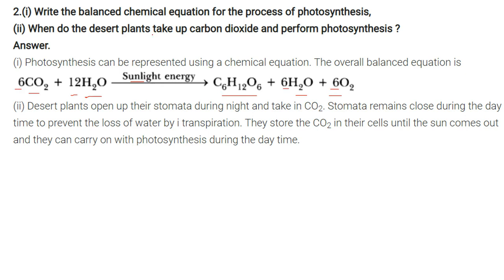How do desert plants take up carbon dioxide and perform photosynthesis? Desert plants open their stomata during the night to take in carbon dioxide. Stomata remain closed during the day to prevent loss of water due to the dry and sunny conditions and transpiration. They store the carbon dioxide in their cells until the sun comes out to carry out photosynthesis during the daytime.